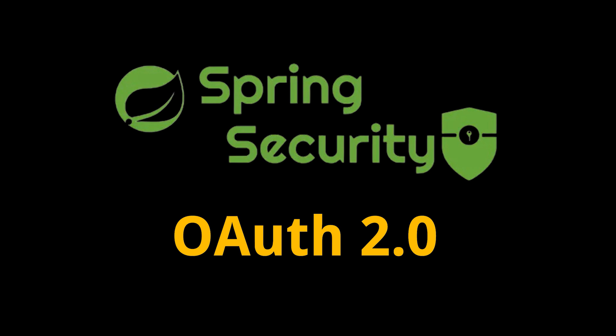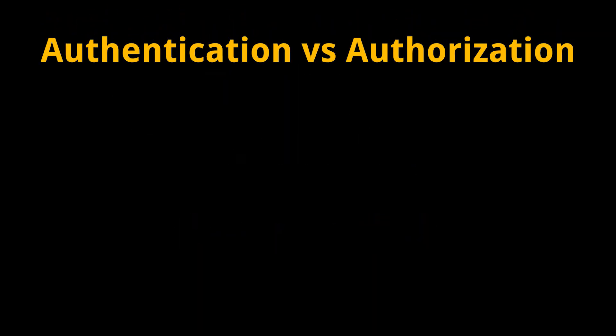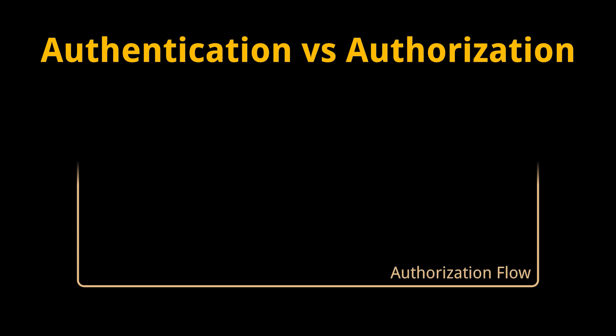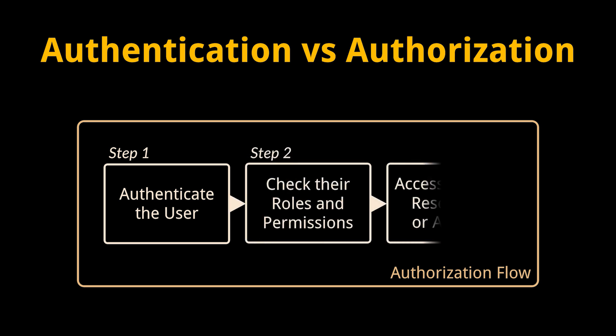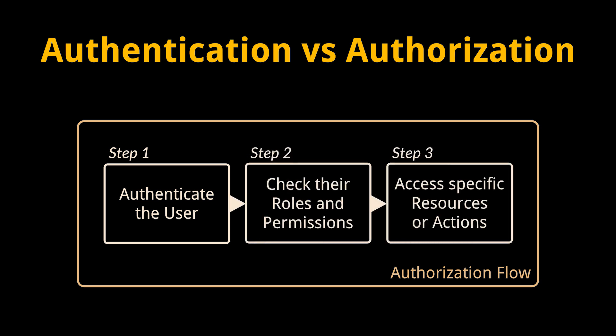The 'auth' in OAuth2 stands for authorization. Before we get started, let's highlight the difference between authentication and authorization. The authorization flow contains authentication as its first step, and that's why people are often confused between the two. Authorization is typically based on roles, permissions, or policies associated with the authenticated identity.